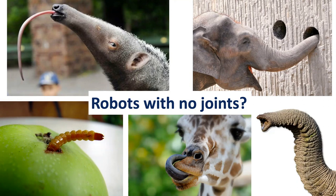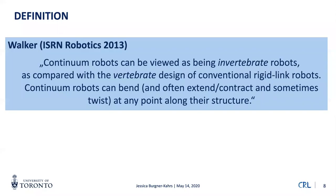Let's define what a continuum robot is. My colleague Ian Walker at Clemson University offered a definition using the animal kingdom: a continuum robot can be viewed as an invertebrate robot, as compared with the vertebrate design of conventional rigid-link robots. Continuum robots can bend and often extend, contract, and sometimes twist at any point along their structure — resembling a tongue or elephant trunk.